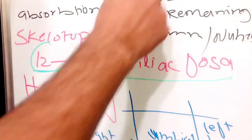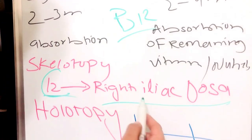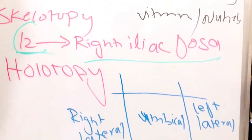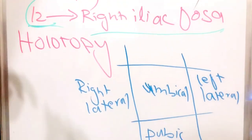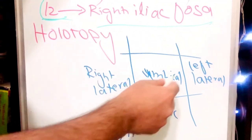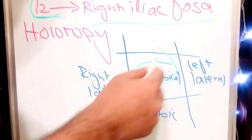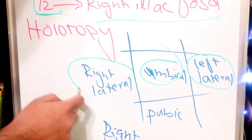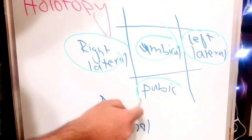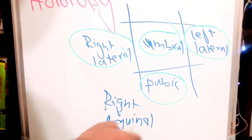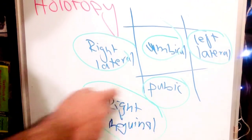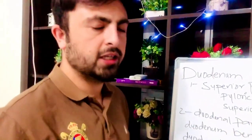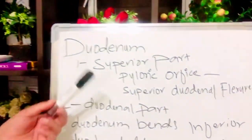That is why we call it the ileum, because it ends in the iliac fossa. If we talk about the holotopy, it lies in the umbilical region, the left lateral region, the right lateral region, the pubic area, and the right inguinal area.